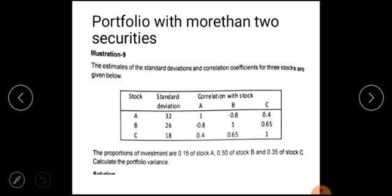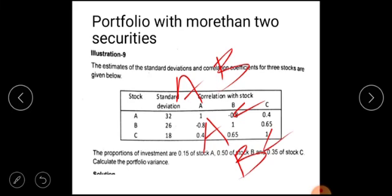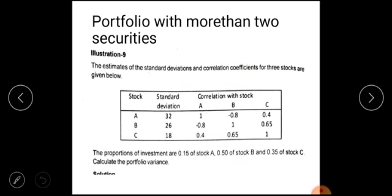If you have three securities — A, B, and C — A and B are not getting the same, A and C are not getting the same, and B and C are also not the same. We are creating three pairs. We are going to build the matrix. We will get the standard deviation and correlation from the question, then create the matrix. The portfolio variance can be calculated using this matrix.